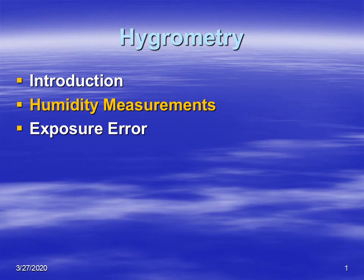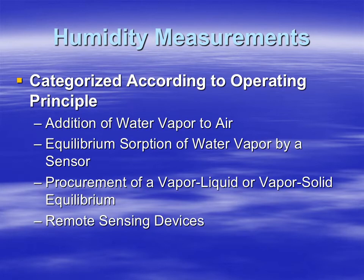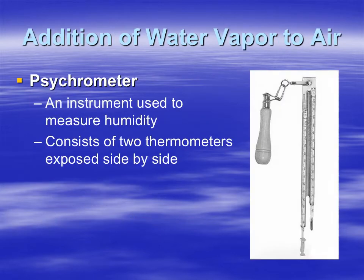We're talking about humidity measurements, and specifically we're going to look at different ways to make moisture measurements of our atmosphere. The first method involves adding water vapor to our atmosphere to figure out how much water vapor is in it. A device used for this is a psychrometer, which measures the humidity in our atmosphere.